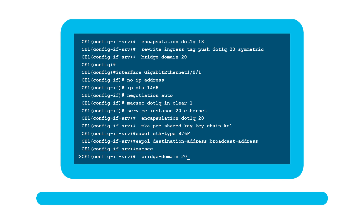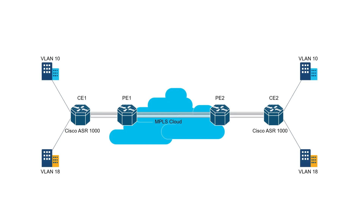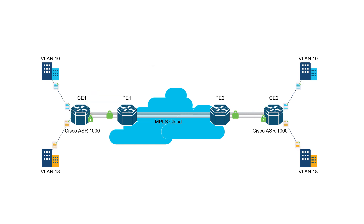For EAPOL frames to navigate seamlessly across the service provider network, you need to modify the destination address and Ethernet type for the EAPOL frame. That's it — the configuration of Cisco MACsec as a service is complete. Now MKA starts negotiating the session, programs the MACsec hardware, and all the data is encrypted.